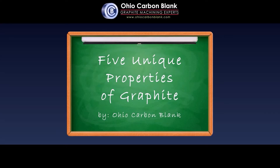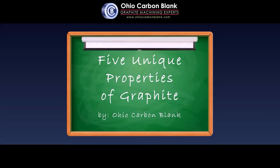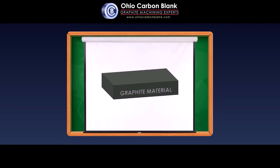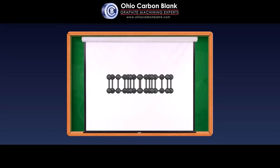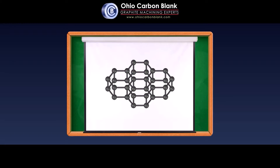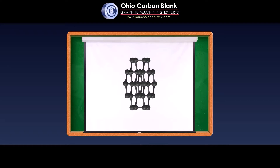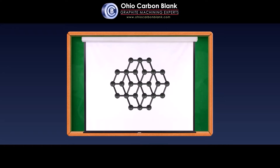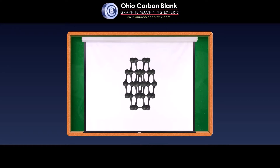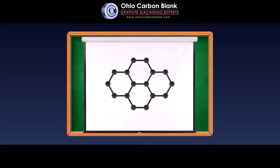Five Unique Properties of Graphite by Ohio Carbon Blank. If you examine graphite using a high-powered microscope, you will notice layers of atoms arranged in a hexagonal or honeycomb shaped configuration. This configuration of atoms allows electrons to move easily within the various planes and gives graphite many of its unique properties.